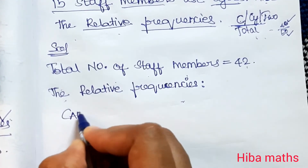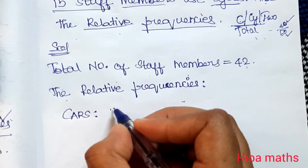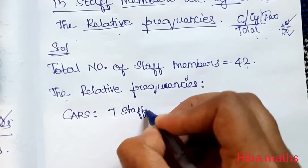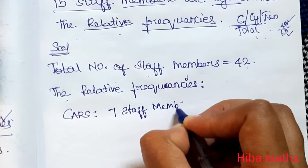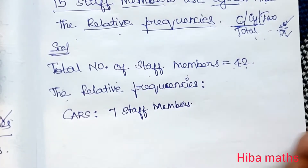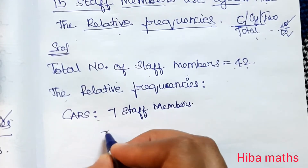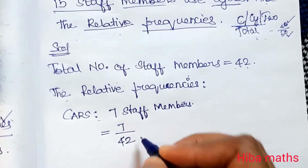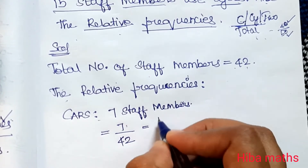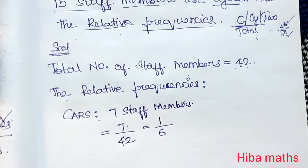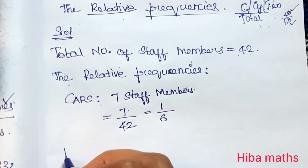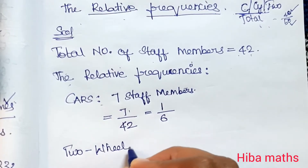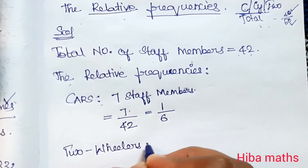First, cars: car is 7 staff members. So total is 42, car is 7 staff members. 7 by 42 — 7 is a factor of 42, which is 6 times — so 1 by 6. Cars relative frequency is 1/6.